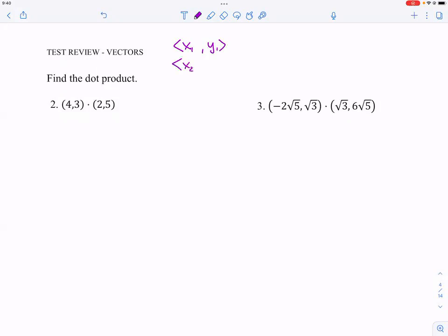If you have two vectors, we have (x₁, y₁) and (x₂, y₂), the dot product is going to be x₁ times x₂ plus y₁ times y₂. That's the dot product.